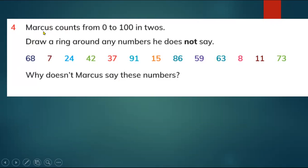Here is question number four on exercise 1.2. First of all, we have to read the question: Marcus counts from zero to one hundred in twos. You have to draw a ring around any number that Marcus will not say when he counts from zero to one hundred in twos.